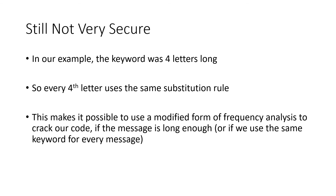Even though this is more secure than the Caesar cipher, it's still not very secure. The keyword was four letters long, so every fourth letter is using the same substitution rule. The first letter is encrypted by adding A, but so is the fifth letter, the ninth letter, the thirteenth letter, and so on. For a long enough message, or if you use this cipher enough times with the same keyword, eventually there's going to be enough information for a modified frequency analysis to work.